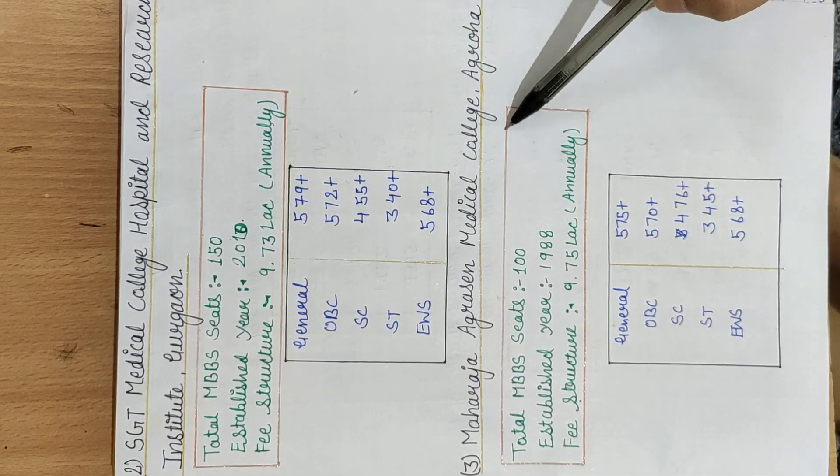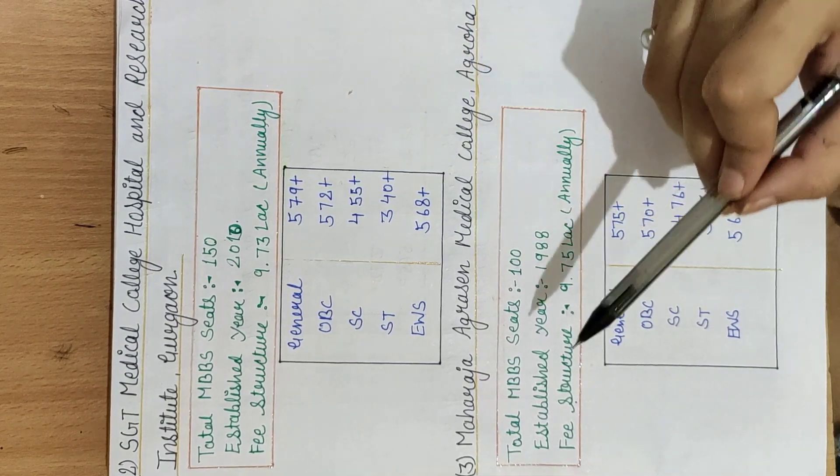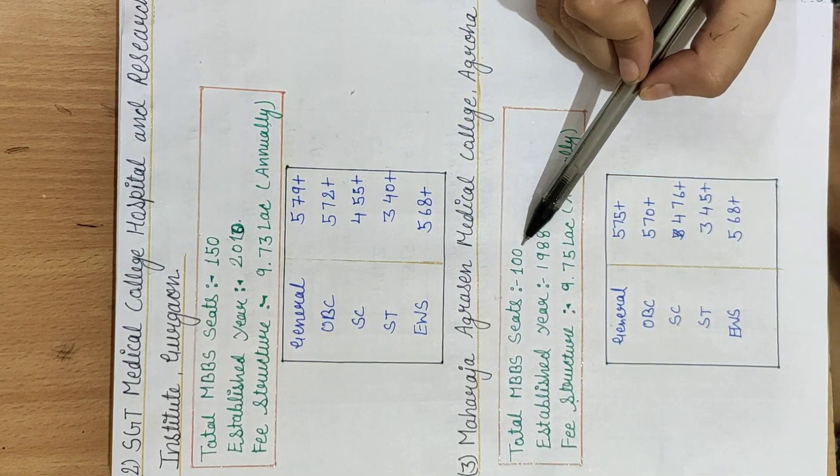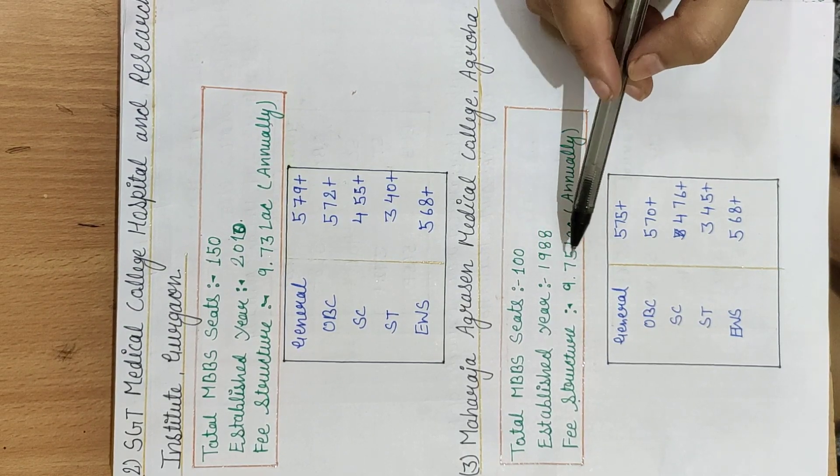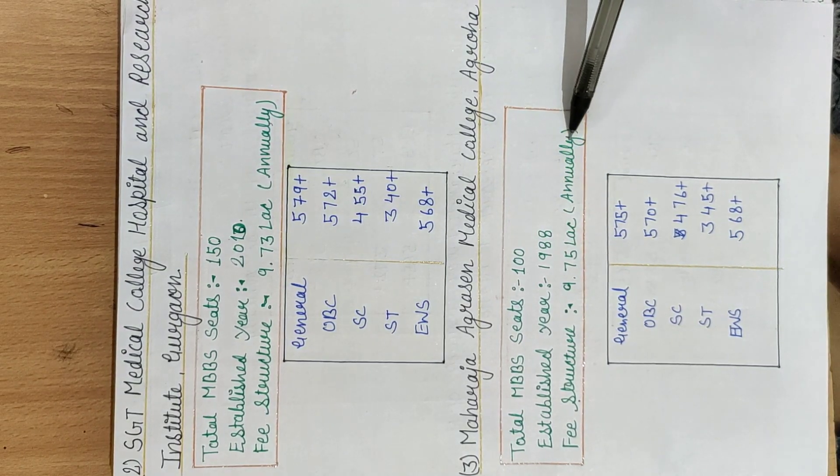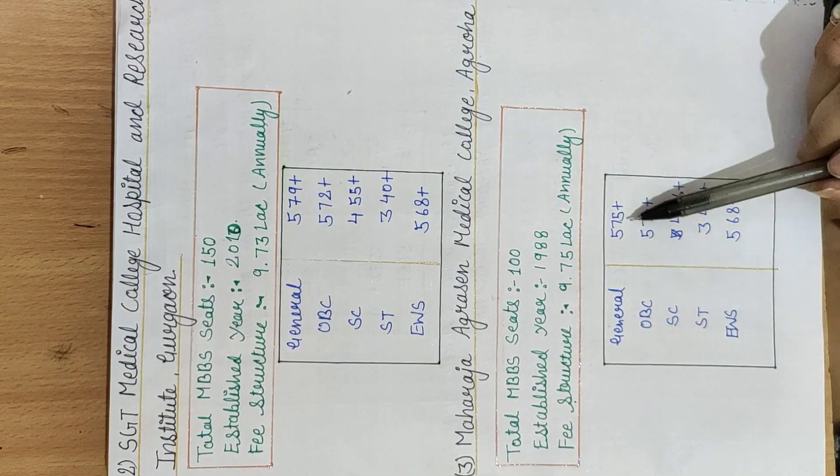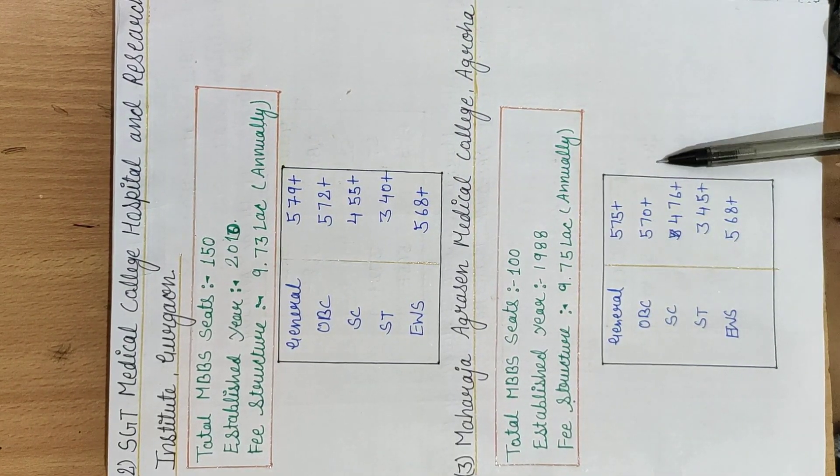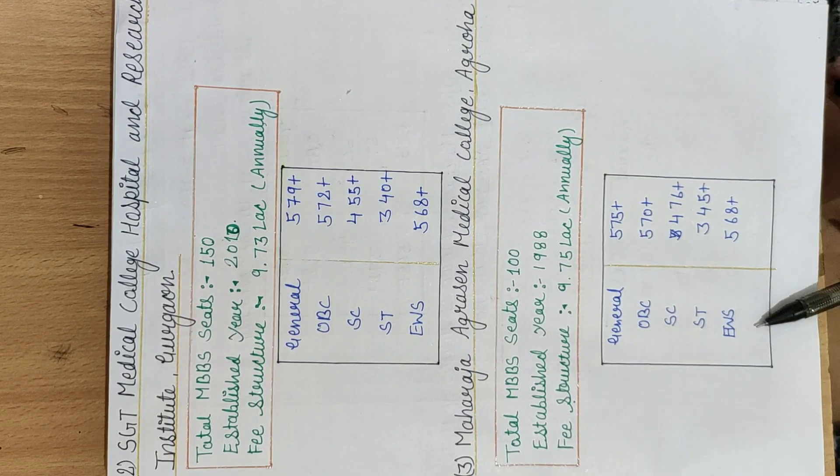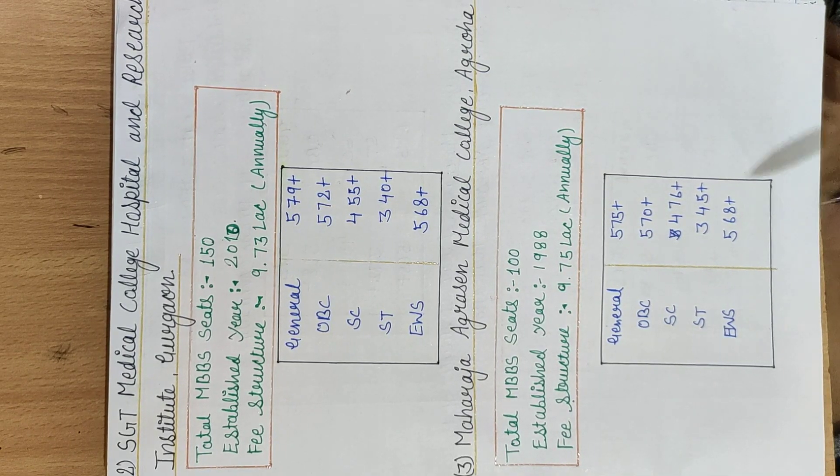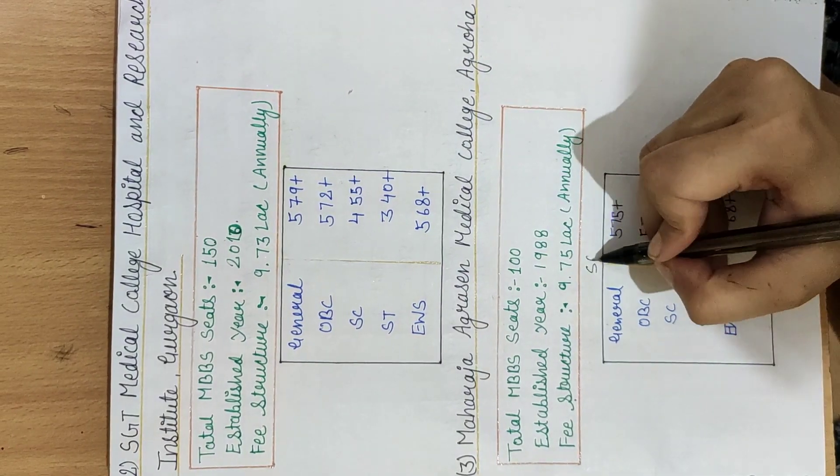Next, we'll talk about Maharaja Agrasen Medical College, Agroha. Total MBBS seats are 700 and establishment year 1988. Its fee structure is 9.75 lakh annually. For general 575 plus, OBC 570 plus, SC 476 plus, ST 345 plus, and EWS category, you need this for state quota.